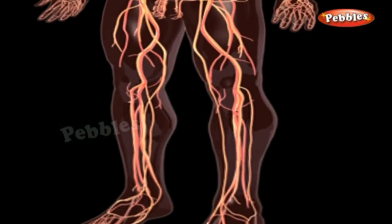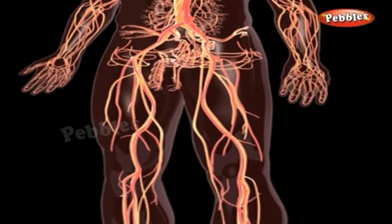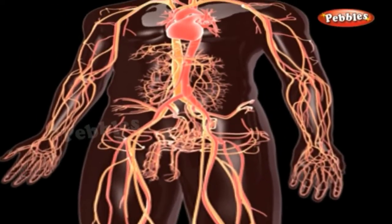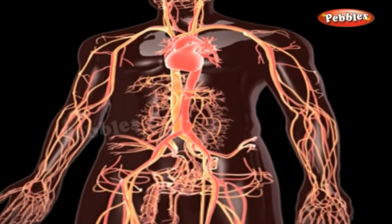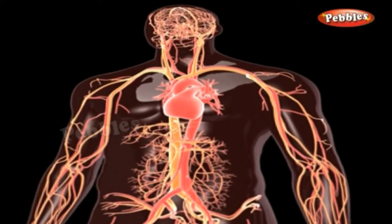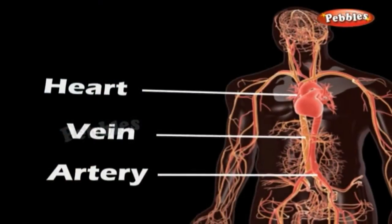What happens when you get a cut on your body? Blood flows out. But what is blood? Blood is the fluid which flows in blood vessels.